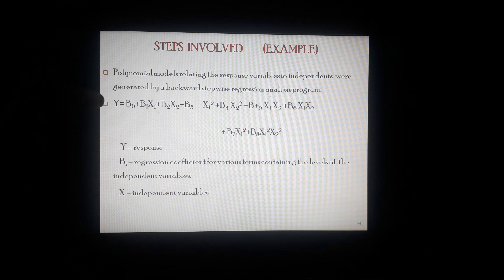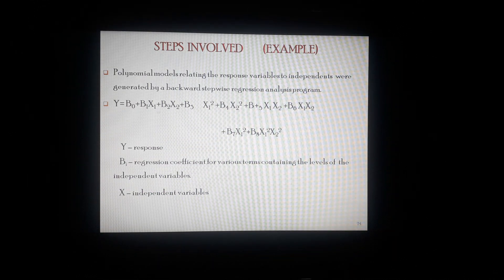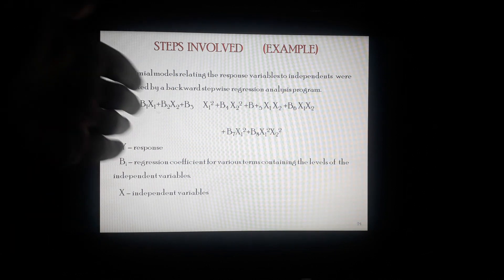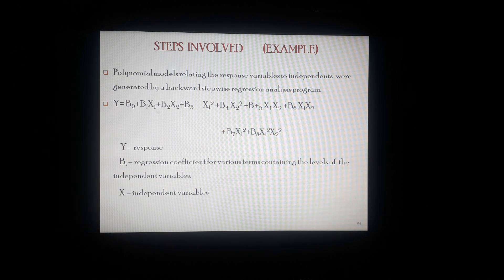In the regression equation, Y represents the response or effect. Beta-0, beta-1, beta-2, beta-3, beta-4, beta-5, beta-6, beta-7, and beta-8 are the different types of intercepts that show their effect upon the response — the dependent variable — along with the independent factors. In short, the intercept along with the effect of each factor upon the responses will be measured here. Y is the response, beta is the regression coefficient for the various terms containing the level of the independent variable, and X is the independent variable.